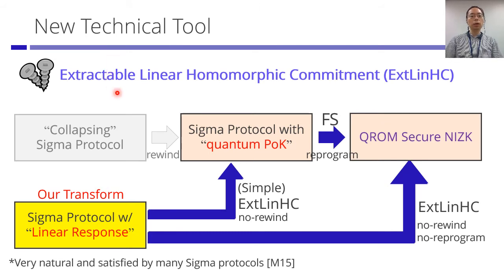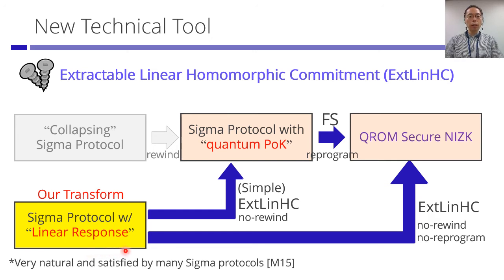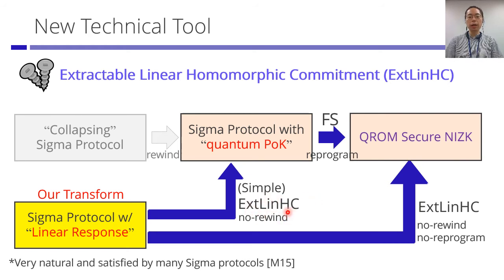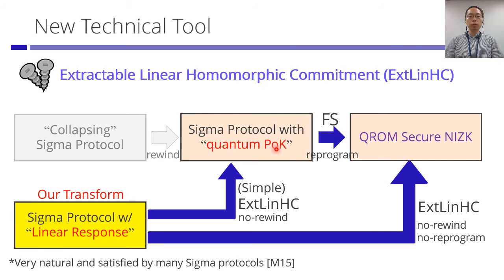The new technical tool developed in this work is called extractable linear homomorphic commitment. Using this extractable linear HC, we can start from any sigma protocol with a linear response — a very natural class satisfied by many sigma protocols. From this primitive, we can combine it with the extractable linear HC and bypass the rewinding argument to directly obtain a sigma protocol with quantum proof of knowledge. We can then use prior reprogram techniques to get a QROM-secure NIZK, or with a more structured extractable linear HC, directly obtain the QROM-secure NIZK without reprogram techniques.